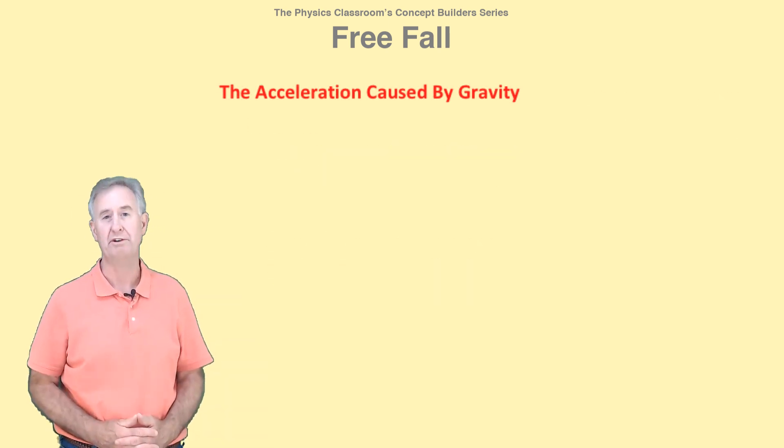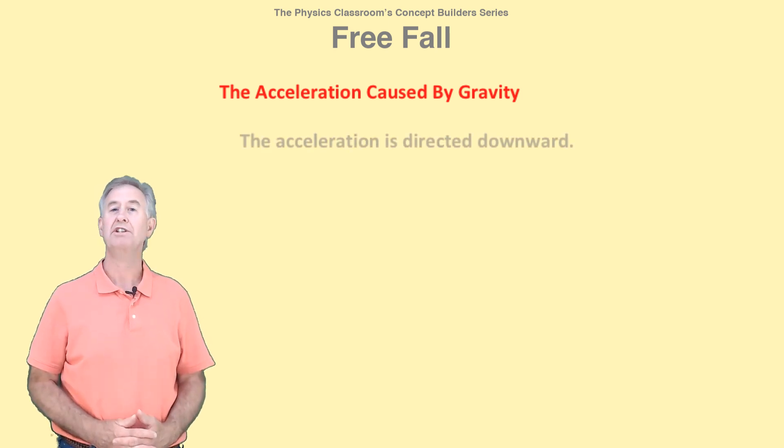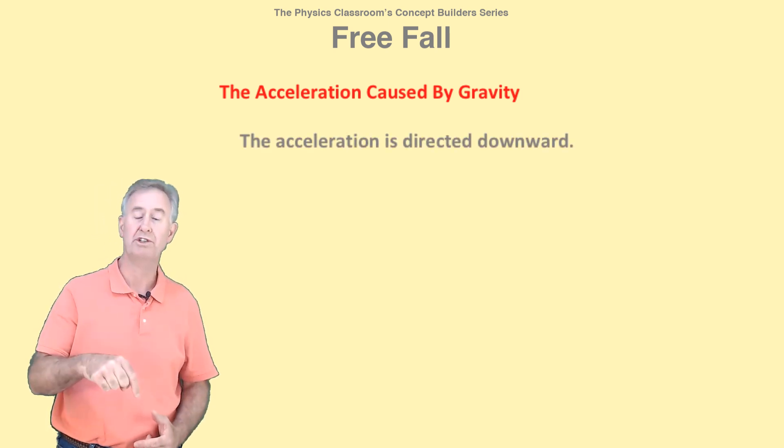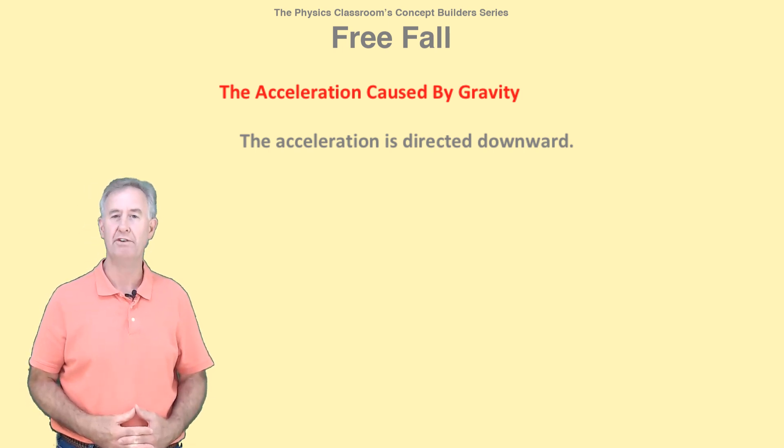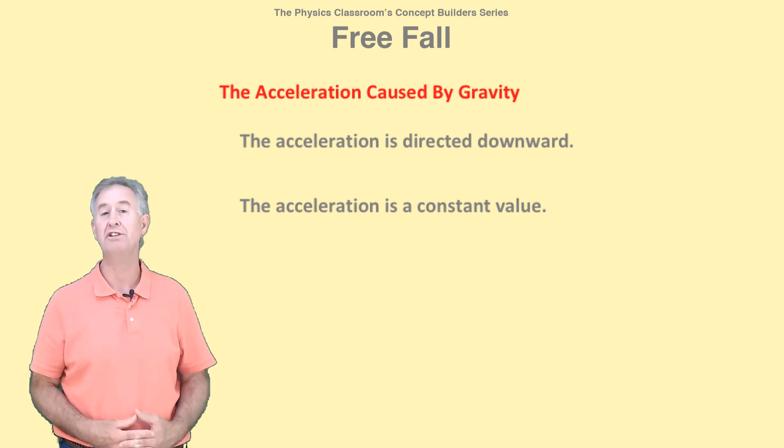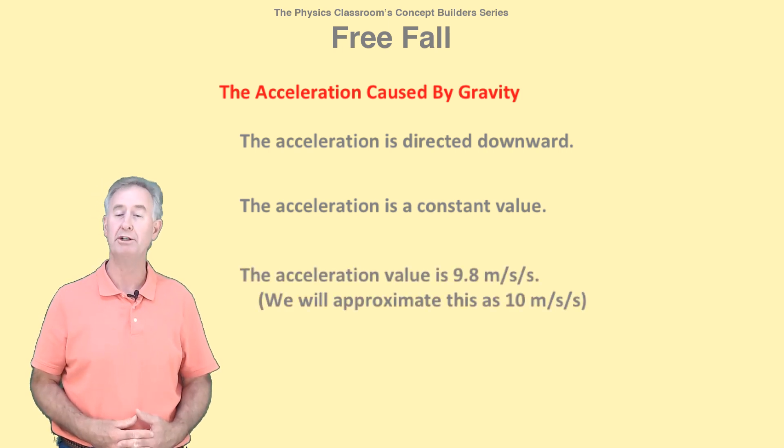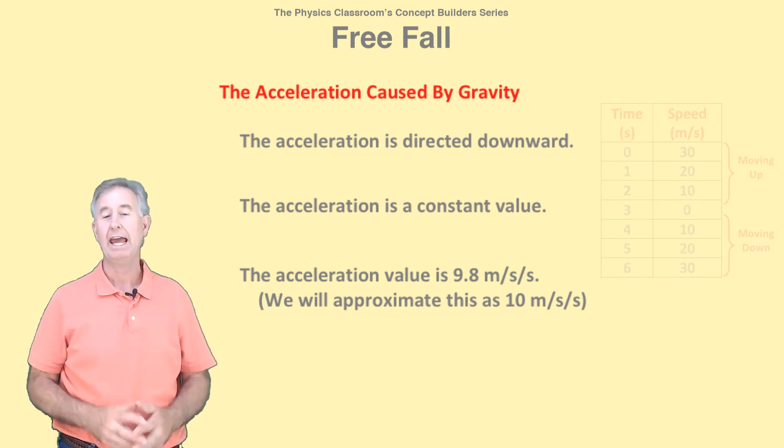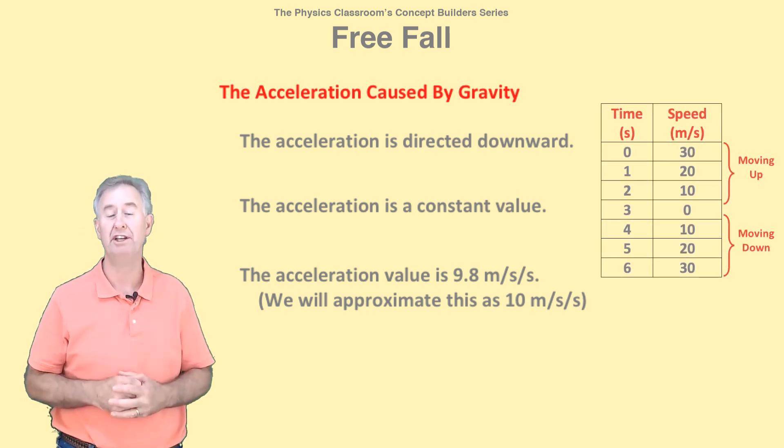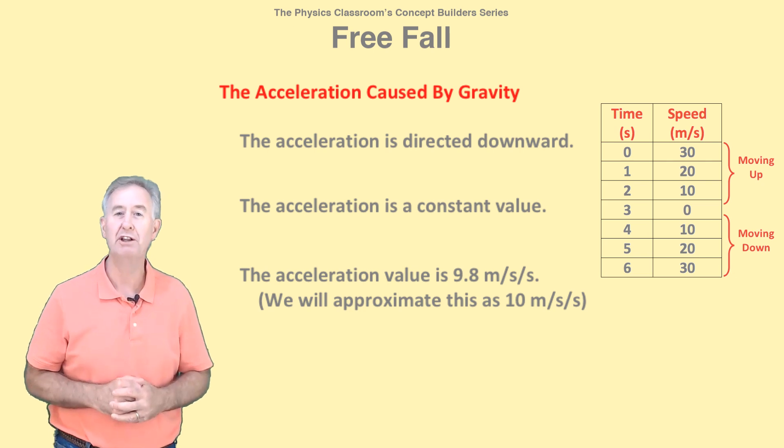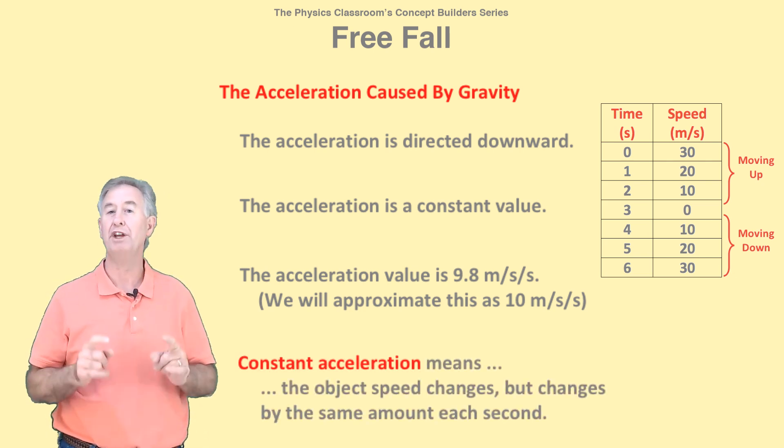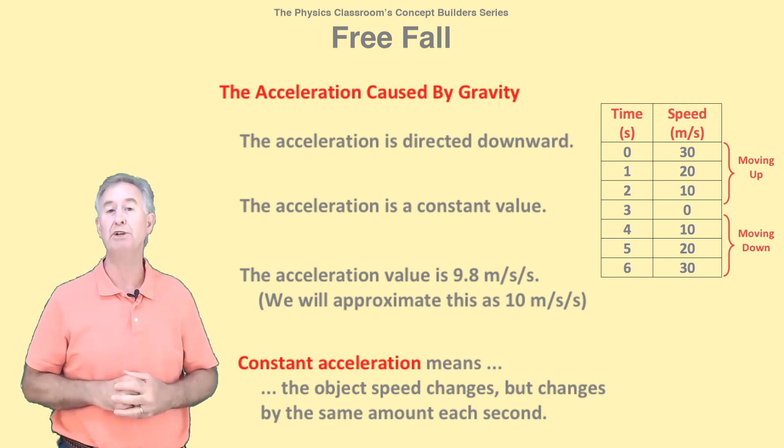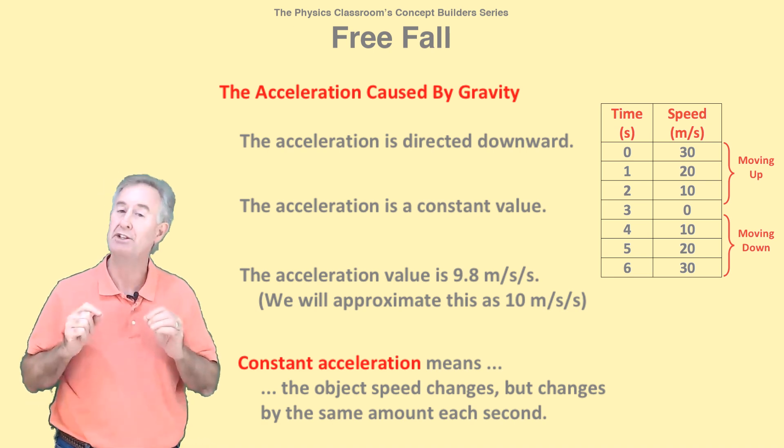Gravity causes objects to accelerate, to speed up, and to slow down. Since the force of gravity is downwards, the acceleration it causes is also downwards. At or near the Earth's surface, the value for the acceleration is a constant value of 9.8 meters per second per second, which we approximate as 10 meters per second per second. As an object rises and falls, it slows down and speeds up. But its acceleration remains a constant, unchanging value. This means that for each second of motion, a free falling object changes its speed by the same change amount, by approximately 10 meters per second.